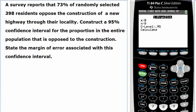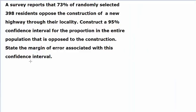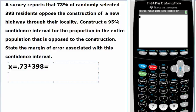Let's quickly do that. x would be 0.73 times 398. So we have 0.73 times 398.